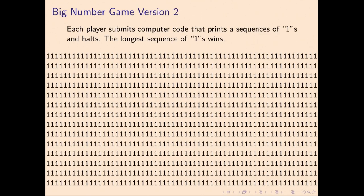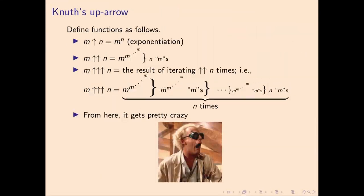Each player submits computer code that prints a sequence of ones and then halts. The longest sequence of ones wins. Of course, we will far exceed the length of time left in the universe with our run times, and our resources won't be able to actually print these. But let's just pretend that we can do this in a hypothetical and consistent way. So what are some good methods for defining large numbers?